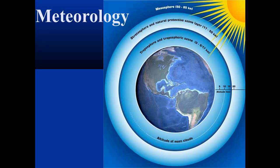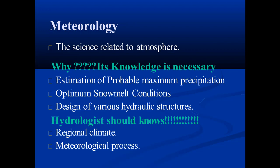What is meteorology? It is the study related to the atmosphere, or the science related to the atmosphere is known as meteorology. The knowledge of meteorology is necessary in order to estimate the probable maximum precipitation, to find the optimum snow melt conditions, and in order to design various hydraulic structures.